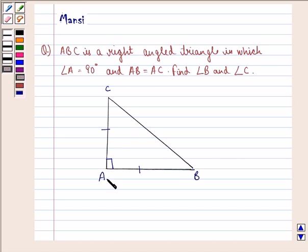Let this be the triangle. Here we see that angle A is 90 degrees and AB is equal to AC. Now we have to find this and this angle.